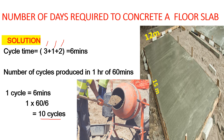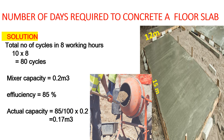Now let's find the number of cycles produced in 8 working hours, since we are told the working hours per day is 8. In one hour it produces 10 cycles, so in 8 working hours it will produce 10 times 8, giving us 80 cycles. So in one working day, this mixer will complete 80 cycles.